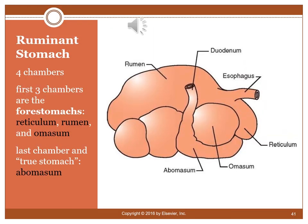The ruminant stomach has four chambers. The first three — the reticulum, rumen, and omasum — are sometimes called the forestomachs. The fourth, the abomasum, is the true stomach, more similar to a human, canine, or feline stomach.